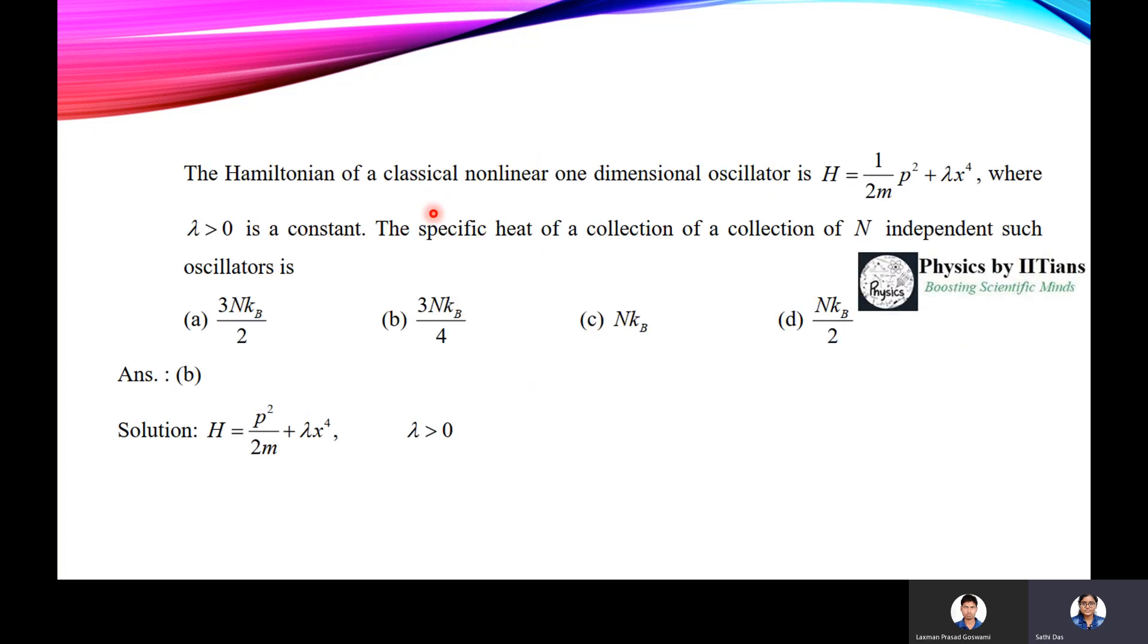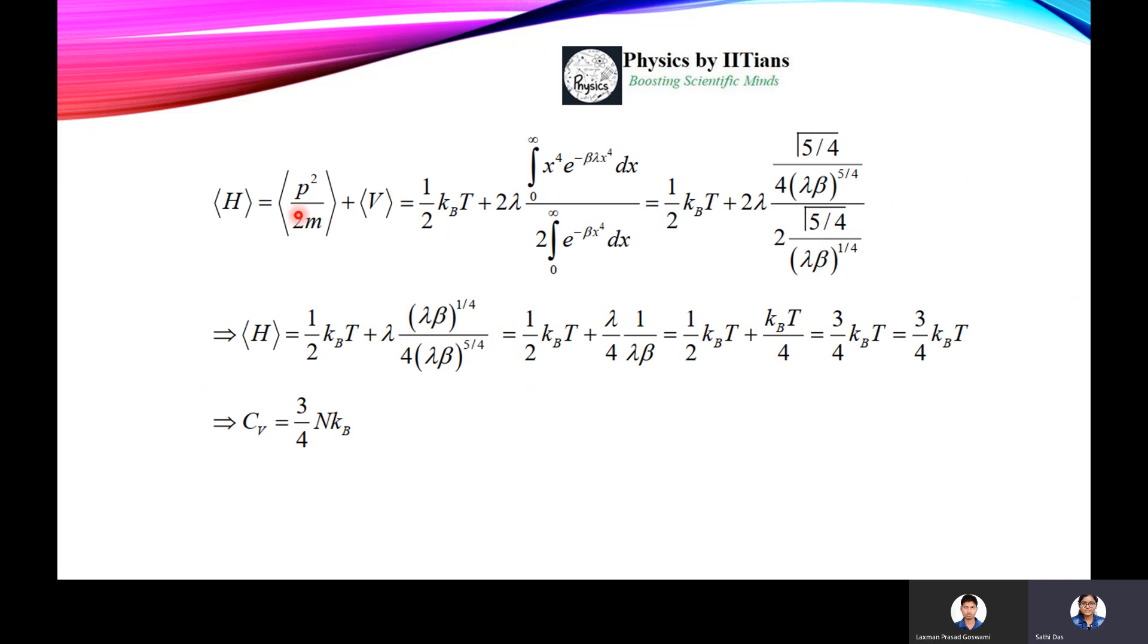Since this is a one-dimensional harmonic oscillator, we are considering half kbT. But if it is not mentioned as one-dimensional, you should take it as three-dimensional. If there was no option of three-dimensional, then only you can take one-dimensional if not mentioned in the question. Since it is mentioned here, we take half kbT plus V average.